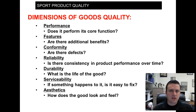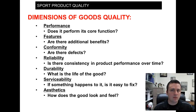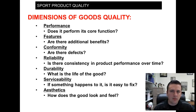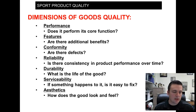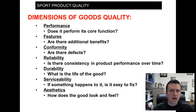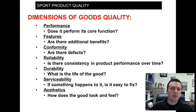Conformity — are there any defects? The advantage of goods is we can reproduce them consistently with high quality and few exceptions. Reliability — is there consistency in product performance over time? Durability — what is the life of the good, how long does it last? Serviceability — if something goes wrong, is it easy to fix and service? And finally, aesthetics — how does it look or feel? Many times people buy a product for this reason. That covers Chapter 7 — complete all assignments and move on to Chapter 8.